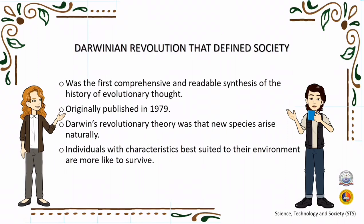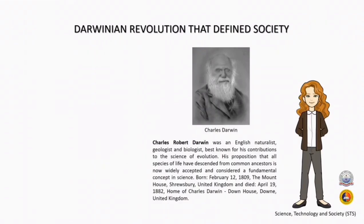It was the first comprehensive and readable synthesis of the history of evolutionary thought, originally published in 1979. Darwin's revolutionary theory was that new species arise naturally. Individuals with characteristics best suited to their environment are more likely to survive. Charles Robert Darwin was an English naturalist, geologist, and biologist, best known for his contributions to the science of evolution. His proposition that all species of life have descended from common ancestors is now widely accepted and considered a fundamental concept in science.